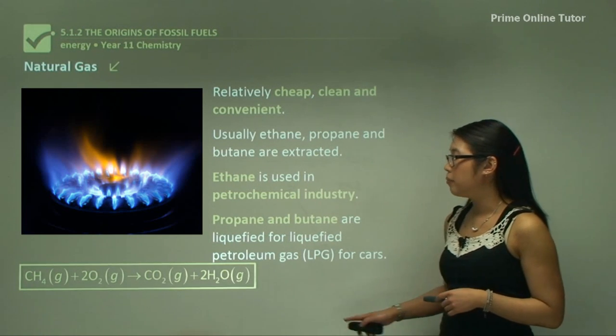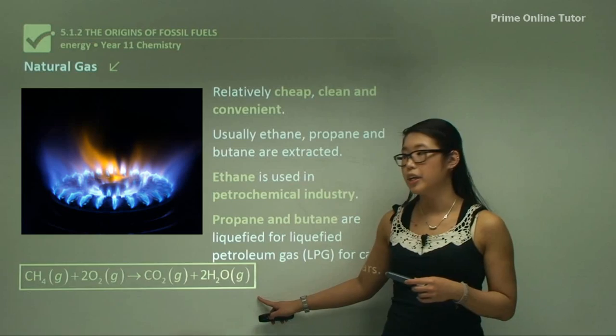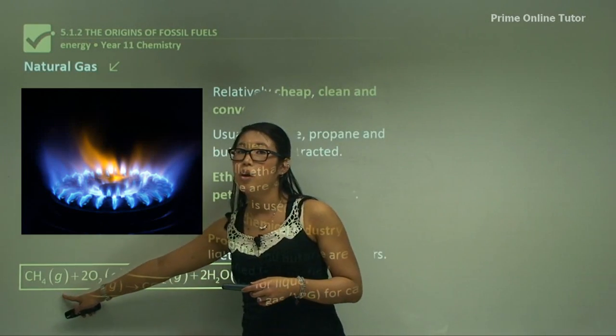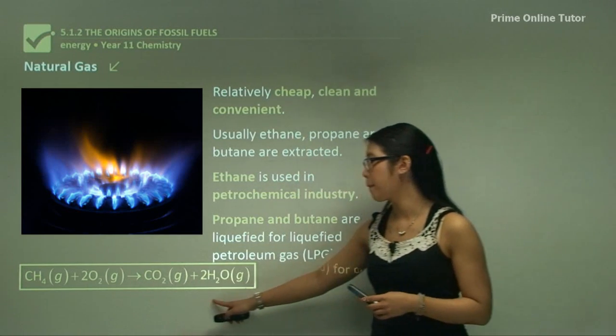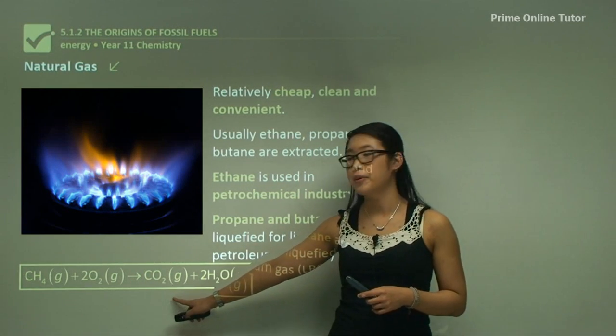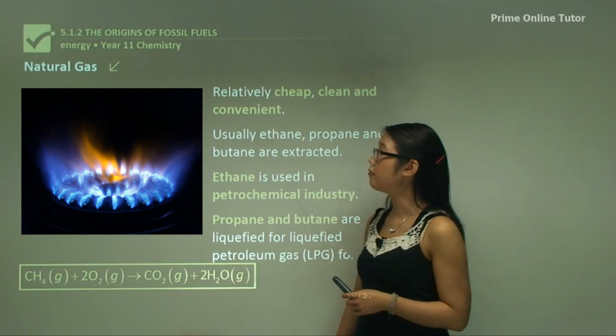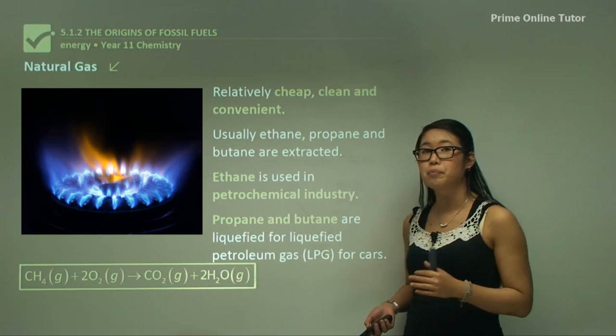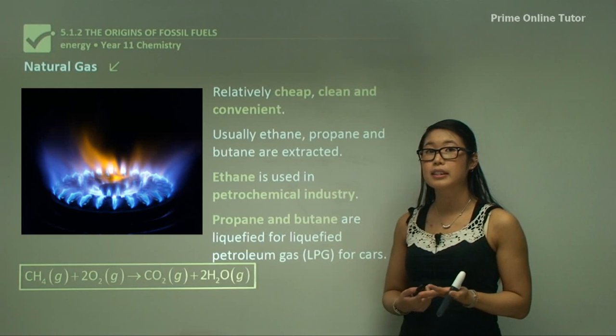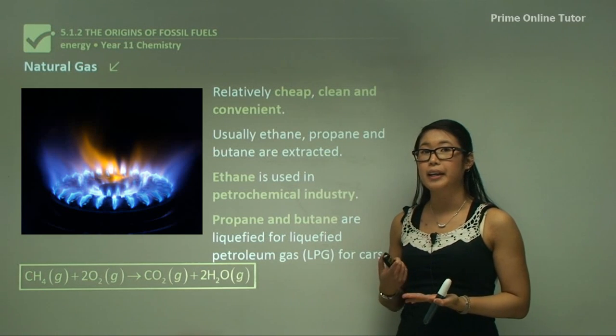When we have methane the combustion reaction is CH4 in gas form. Combustion always uses up oxygen, so we need oxygen, and it produces carbon dioxide and water. In summary, we were looking at different types of fossil fuels: natural gas, petroleum and coal.